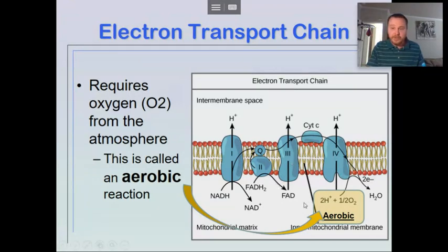So free floating hydrogen ions within the mitochondria will now, using this enzyme right here, this enzyme will force one of these oxygen atoms to bind with two hydrogens and generate water. And that removes more hydrogen ions from inside the mitochondria.